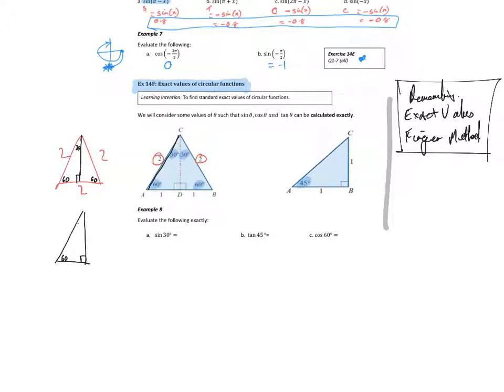That's 60, 30, that's 2, that's 1. From Pythagorean theorem, 2² = x² + 1², which means x equals the square root of 3. So sine 60° equals opposite over hypotenuse, which is √3/2. Cosine 60° is adjacent over hypotenuse, which equals 1/2.